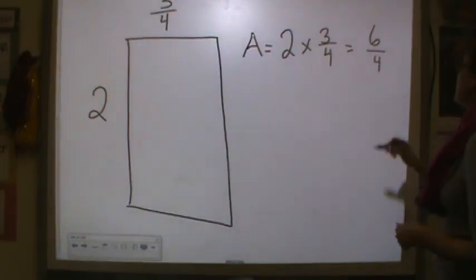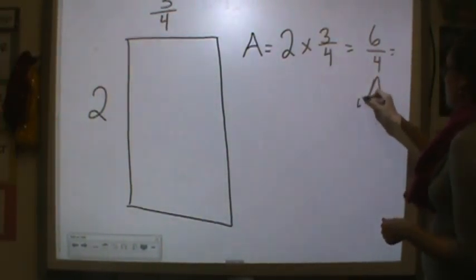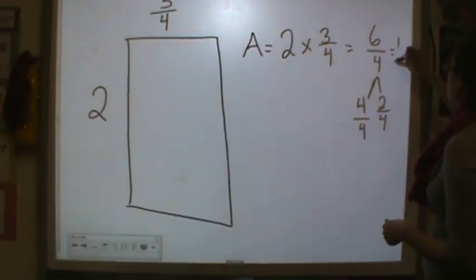The denominator stays the same. And then 6/4, if you decompose it, 4/4 makes a whole and you have 2 more fourths. So that's equal to 1 and 2/4. In simplest form that would be 1 and 1/2.